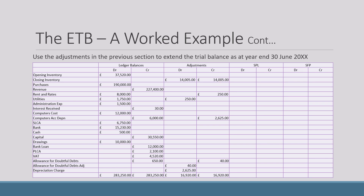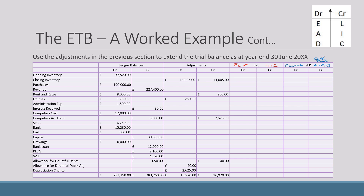Now I'm going to bring the information up again with the adjustments typed in so they're easy to see, and put our DEADCLIC in the corner. Before we start, let's briefly go through what sits on which statement. The statement of profit and loss has all our expenses and income. The statement of financial position has our assets, liabilities, capital and drawings.